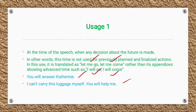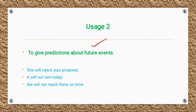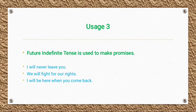Its second usage is to give predictions about future events — what will happen in the future. For example: 'She will reject your proposal', 'It will not rain today', 'We will not reach there on time.'